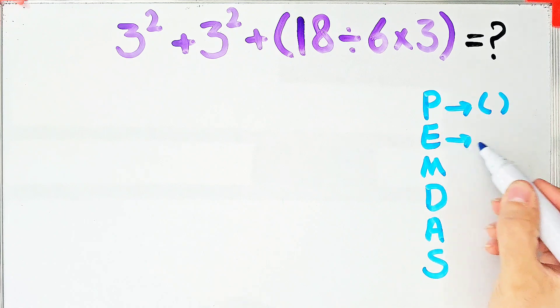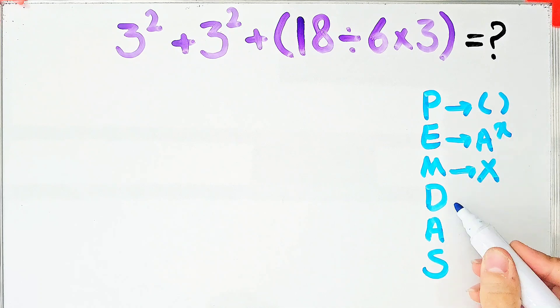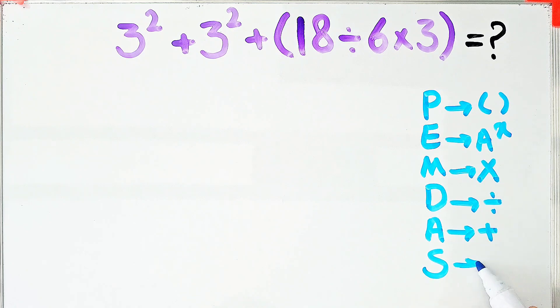In this rule, P stands for parentheses, E stands for exponent, M stands for multiplication, D stands for division, A stands for addition, and S stands for subtraction.